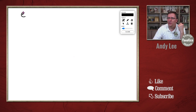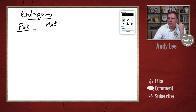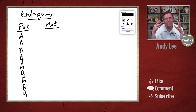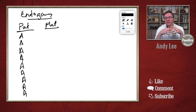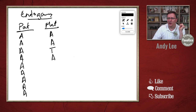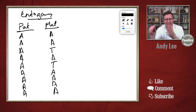Let's look at this again with endogamy. We have a paternal and a maternal chromosome. Our paternal starts off with AAAA. Remember, with endogamy, the same family members have been intermarrying with relatives for many generations, which means you don't see as much diversity in the DNA. So instead of the maternal being all T's, in an endogamous case, most of those T's have gone away and been replaced by A's. It's still a distinct set of DNA and different from the paternal, but much more similar.